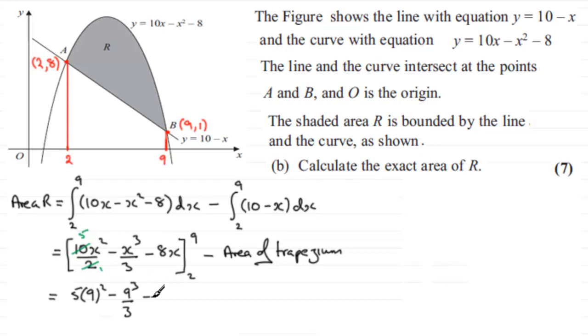And then we've got to put the 2 through. Remember we subtract what we get when we put the 2 through. So we're now going to have 5 times 2², and then -2³ over 3, -2³ over 3, and then -8 times 2. Okay, and then we've got minus the area of this trapezium.